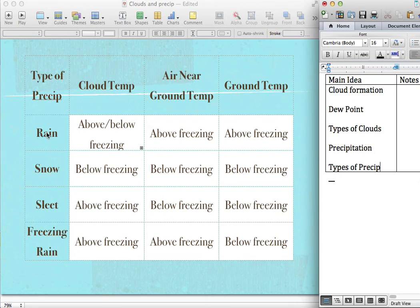So for rain, the cloud temperature, so the temperature in the clouds can either be above or below freezing. So sometimes rain will start out as snow in the clouds, but then the air near the ground is above freezing, so it melts. And it hits the ground as water. The ground temperature is also above freezing, so it stays as water.